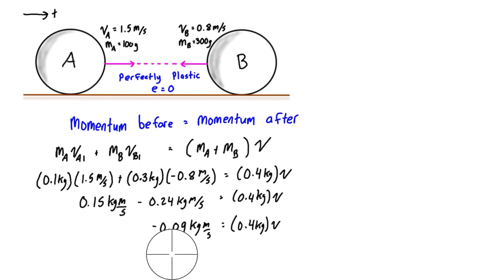After we find the final velocity, we're going to check to make sure that our momentum after equals this as well. If we just divide 0.4 kilograms from each side, we have negative 0.09 kilogram meters per second all over 0.4 kilograms, and that gives us the final velocity, which equals negative 0.225 meters per second.